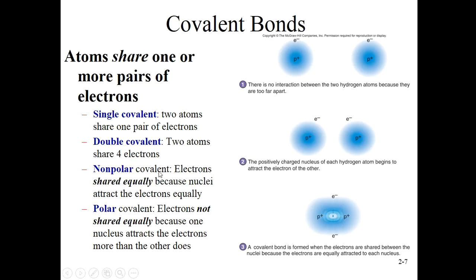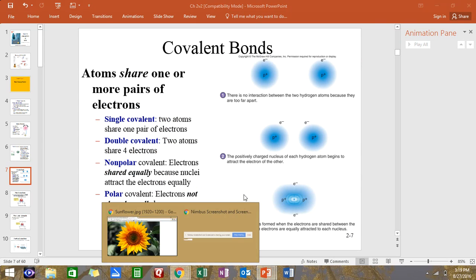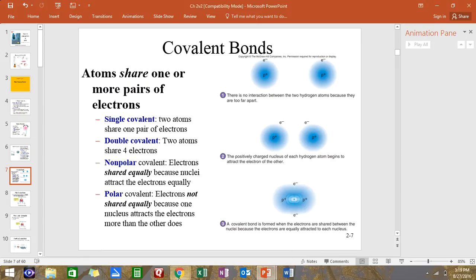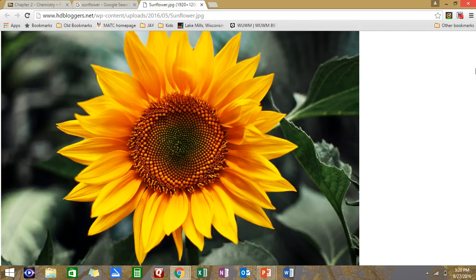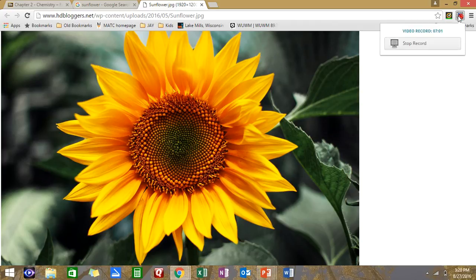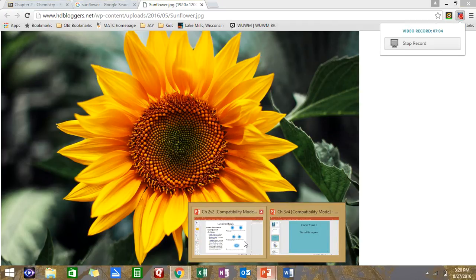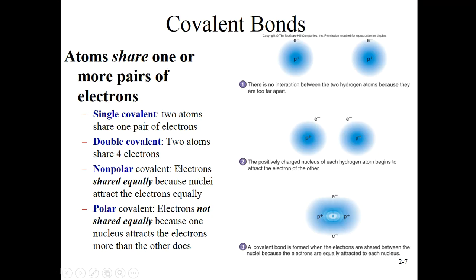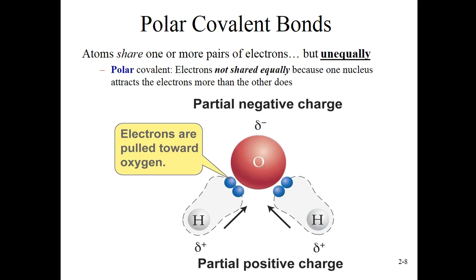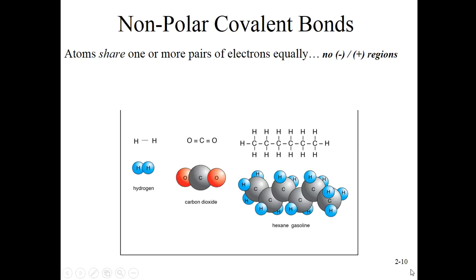All of these covalent bonds I've just been talking about are examples of what we really call a nonpolar covalent bond. Polar, you're probably thinking north pole and south pole, or maybe you're thinking about the poles of a magnet, which are both excellent examples. Nonpolar covalent bond means the electrons are shared equally because the nuclei attract the electrons equally.